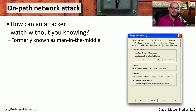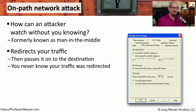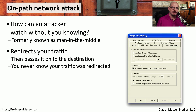An on-path attack allows an attacker to sit between two devices and watch all of the traffic go back and forth between those systems. You might have also heard this referred to as a man-in-the-middle attack. The attacker is responsible for transferring information from one device to the other, and can look at or modify the information being sent in real time. What's perhaps even more concerning is the victim devices have no idea this attack is taking place — the on-path attack is effectively invisible to them.